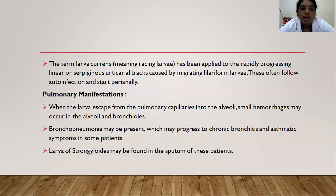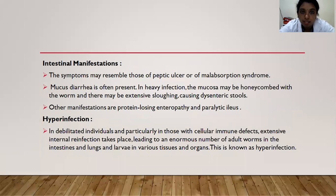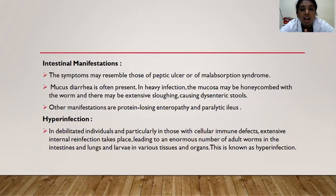Pulmonary manifestations: when larvae escape from the pulmonary capillaries into the alveoli, small hemorrhages may occur in the alveoli and bronchioles. Bronchopneumonia may be present, progressing into chronic bronchitis and asthmatic symptoms in some patients. Larvae or strongyloids may be found in the sputum. Intestinal manifestations: symptoms may resemble peptic ulcer or malabsorption syndrome. Mucous diarrhea is often present. In heavy infection, the mucosa of the host may be honeycombed with the worm, with extensive sloughing causing dysenteric stools. Other intestinal manifestations are protein-losing enteropathy and paralytic ileus.